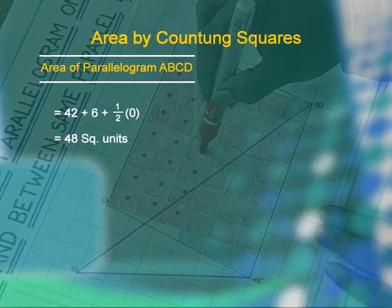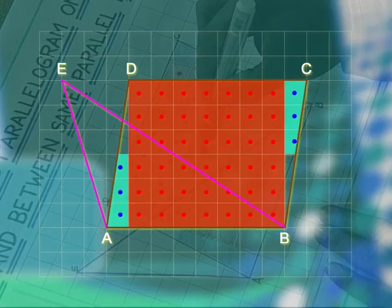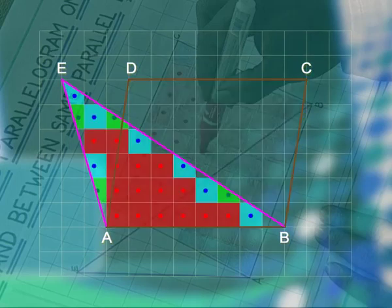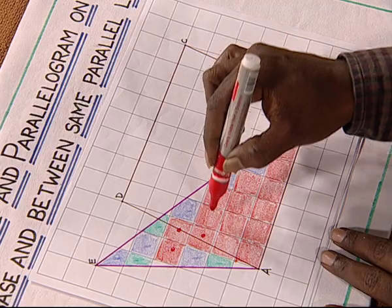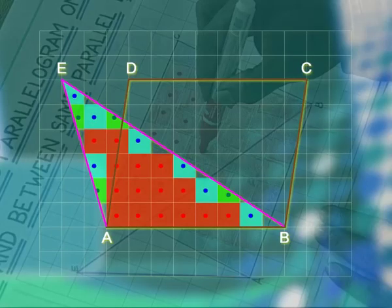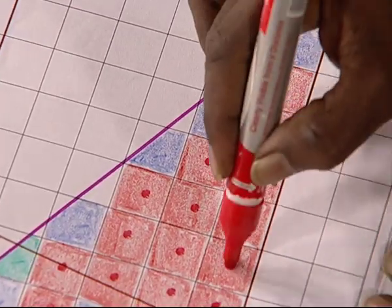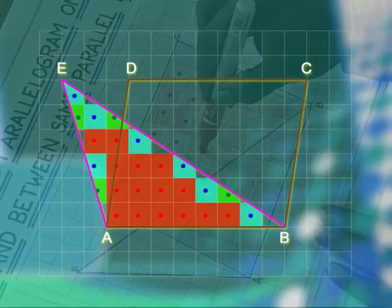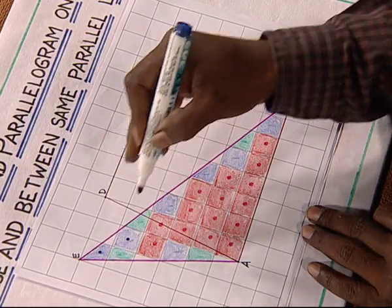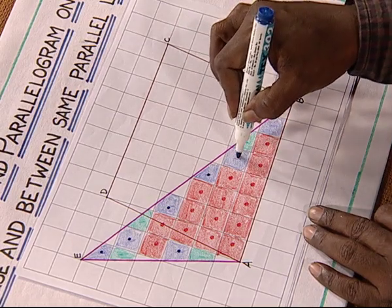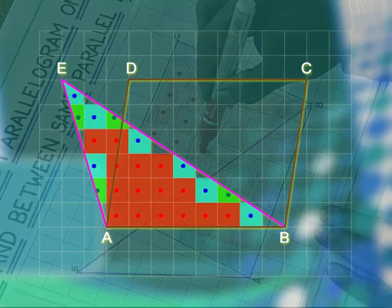Similarly, we find the area of triangle AEB. In triangle AEB, the fully shaded squares — marked with a red dot — are 15, and the more than half shaded squares — marked with a blue dot — are counted and noted. The exactly half shaded squares are also identified and marked accordingly.